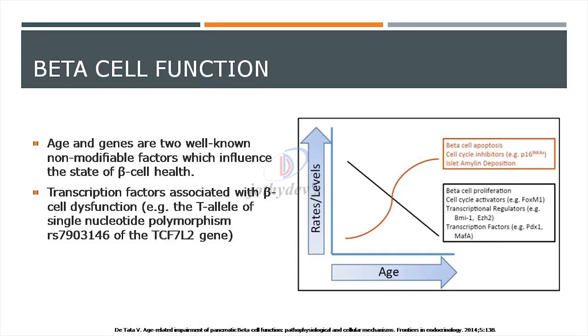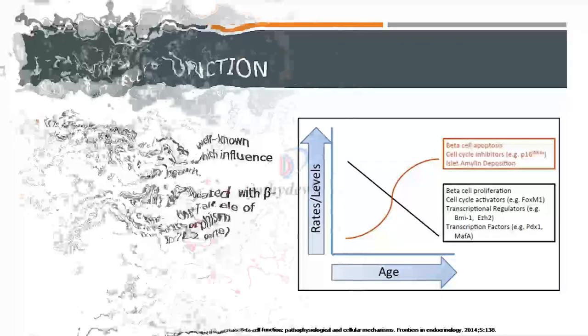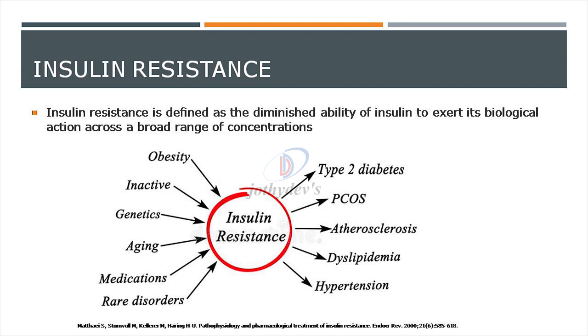Age and genes are two well-known non-modifiable factors influencing beta cell health. Transcription factors associated with beta cell dysfunction include the T allele of the single nucleotide polymorphism of the TCF7L2 gene — a marker for future genomics and precision diabetology. With advancing age there is beta cell apoptosis and amyloid deposition in islet cells. Insulin resistance is a consistent finding in type 2 diabetes, appearing even before its onset.